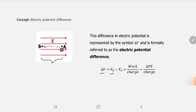So delta V is the difference between the potential at point B minus the potential at point A. The potential at the final position, minus the potential at the initial position.